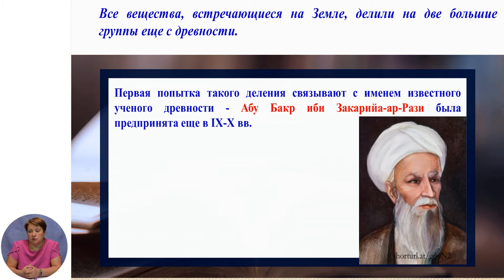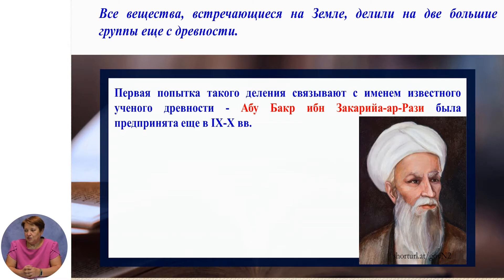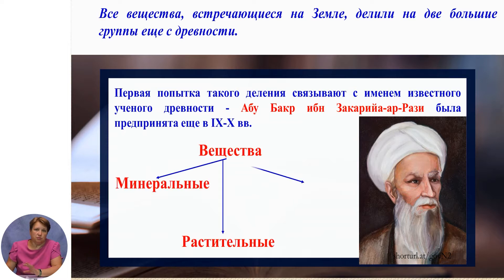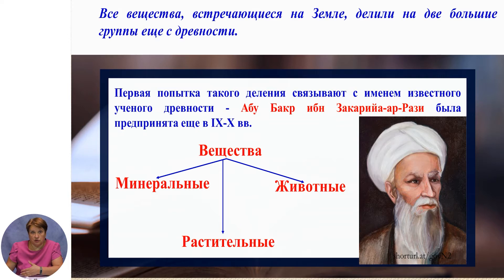The first attempt at such a classification was made by ancient scholars such as Abu Bakr al-Zakaria al-Razi back in the 9th–10th century. That is, all substances were divided into mineral (inorganic), plant, and animal origin.